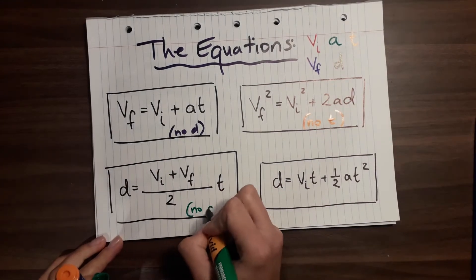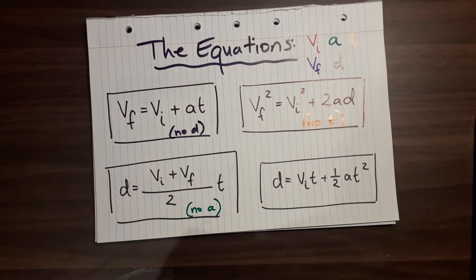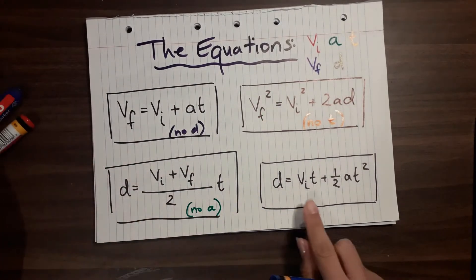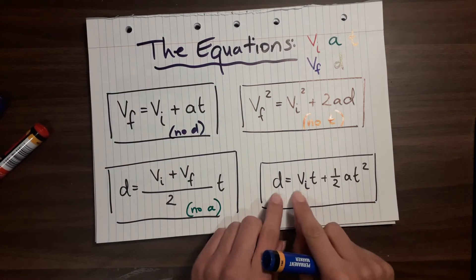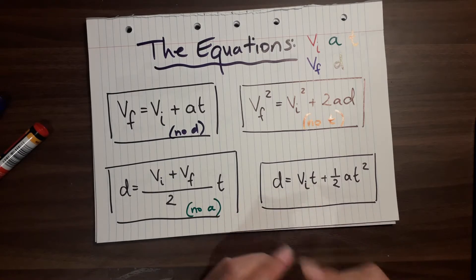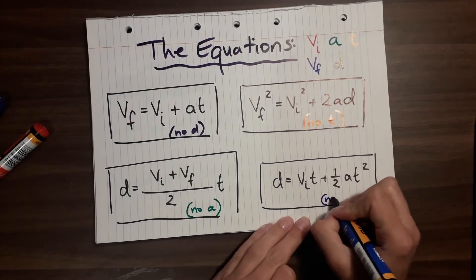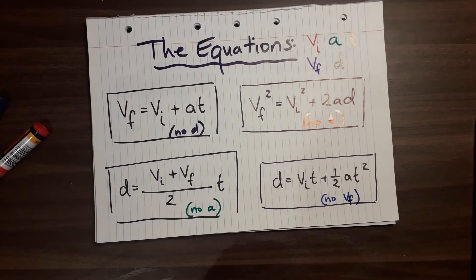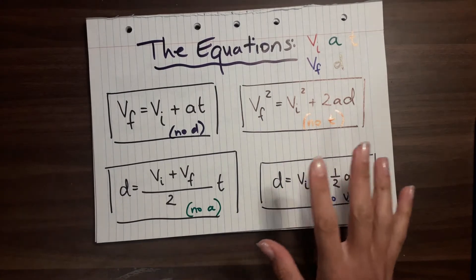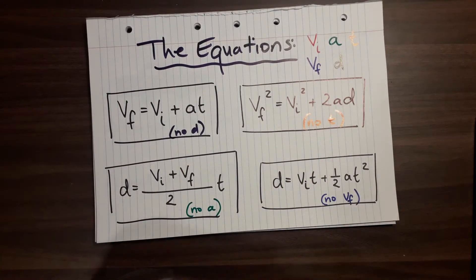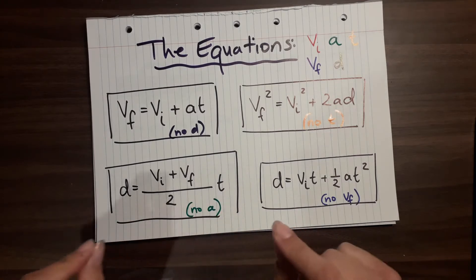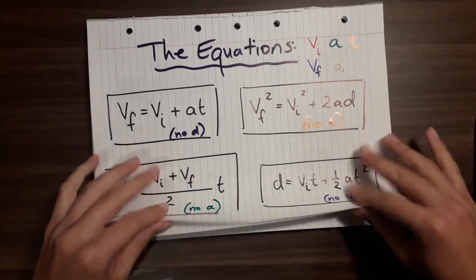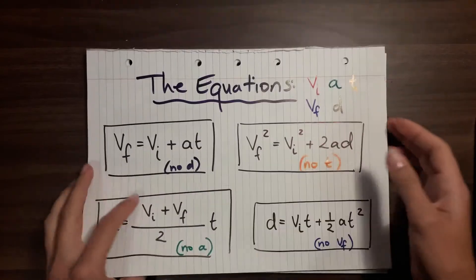This one here has acceleration, time, distance and initial velocity, but it does not have the final velocity. So when you are given your kinematic equations, the fastest way to find the one you need to use is to look for the equation that does not have the thing that you are not given. Let's do an example together so you can see what I mean.